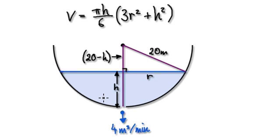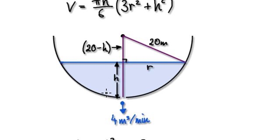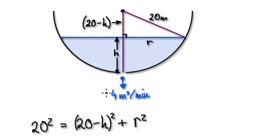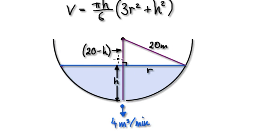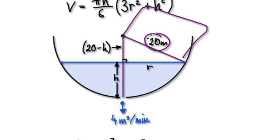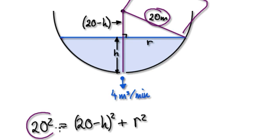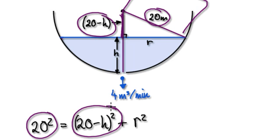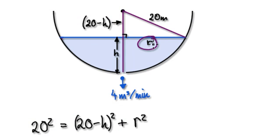This distance here is given by this. Using Pythagoras, this squared would be this length squared. Then r squared - we're just trying to rewrite r in terms of h because r is just reacting to h.